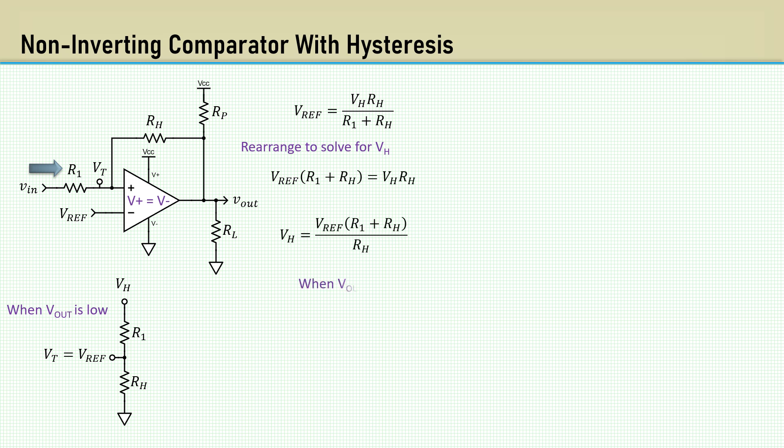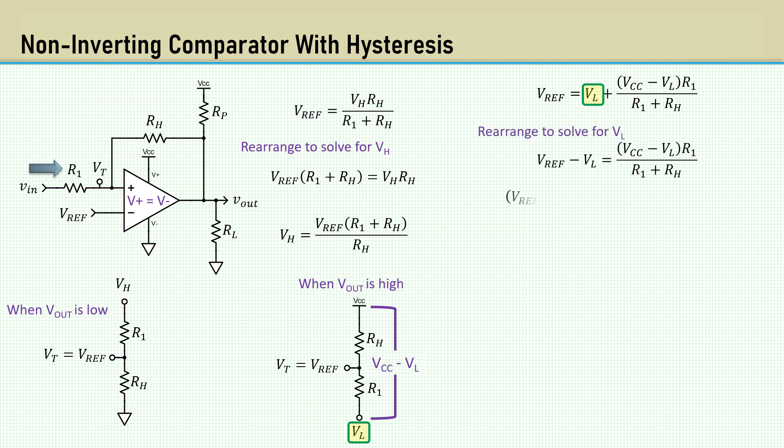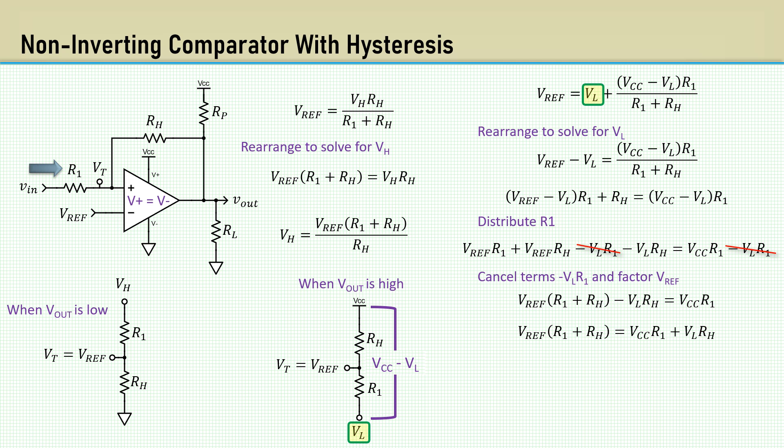When Vout is high, RH is connected to VCC. The voltage divider equation will have an input of VCC minus VL with VL added to it. Now we proceed with solving for VL. Distribute R1. The minus VL R1 terms cancel and then factor Vref. And finally, we get the solution for VL.